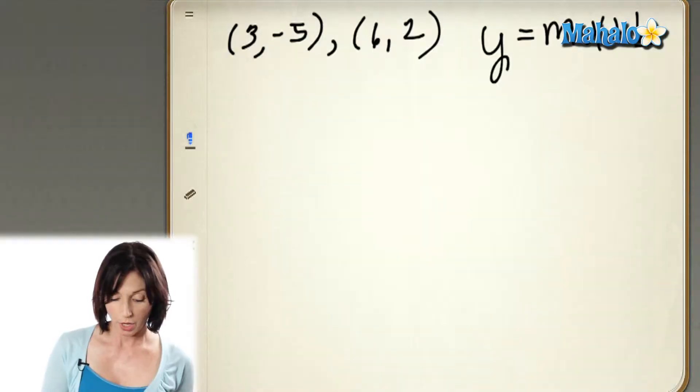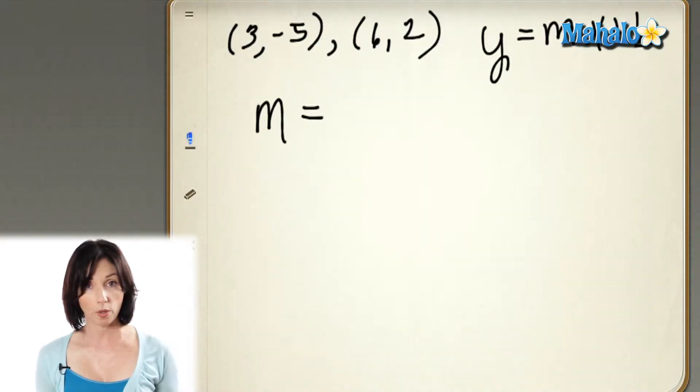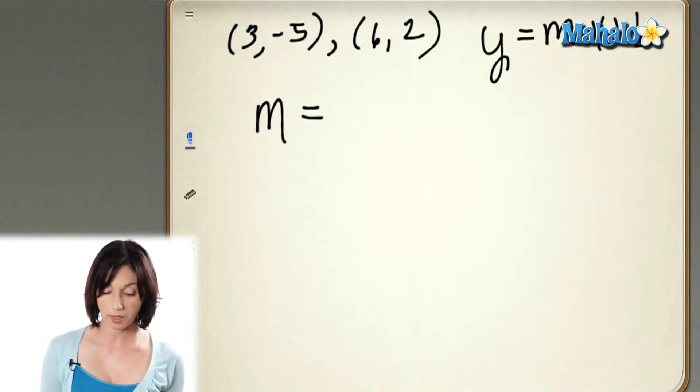So the first thing we need to do is find the slope. I'm going to use my two points here to find my slope. Slope is equal to the difference in the y-coordinates over the difference in the x-coordinates.